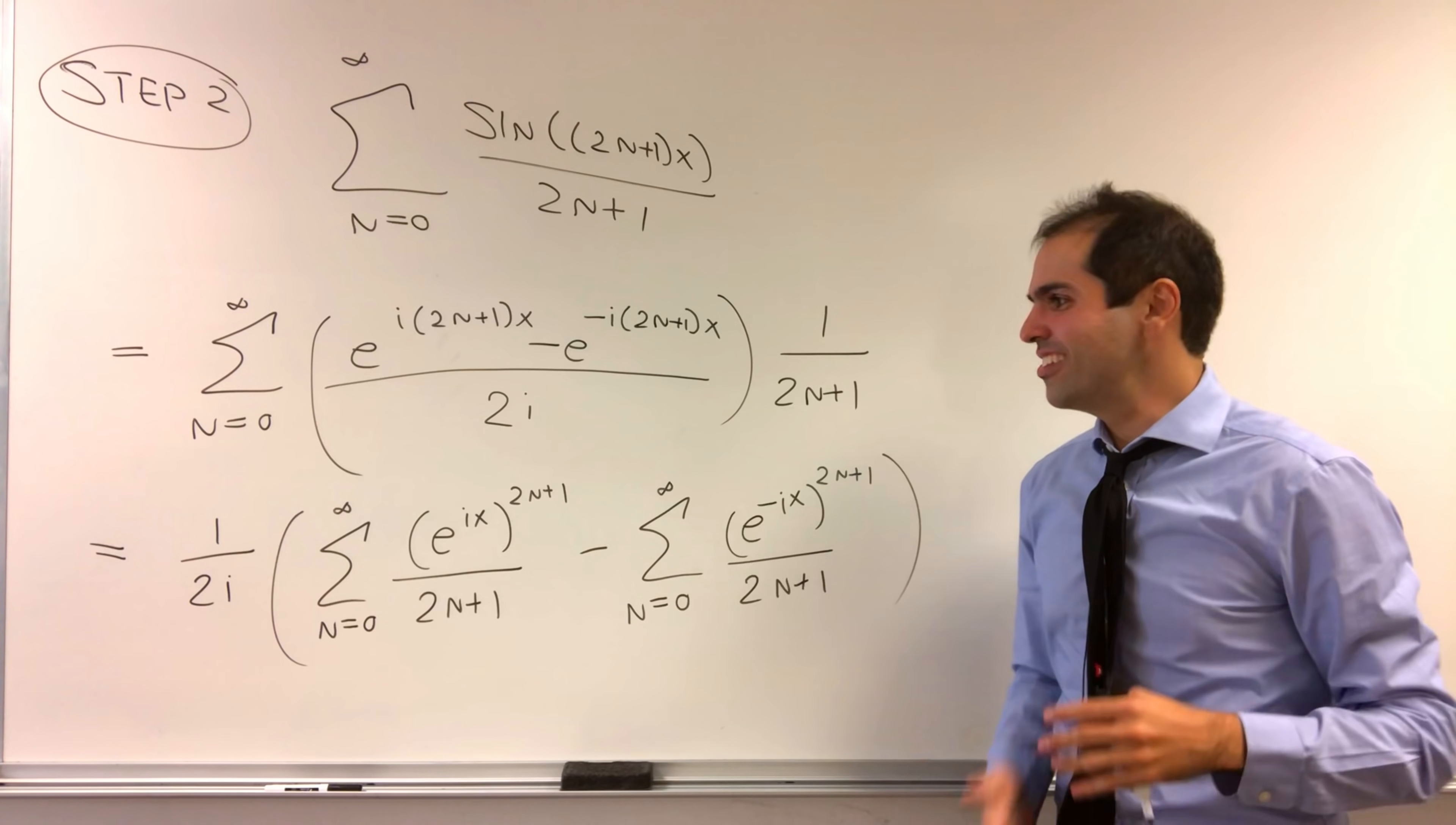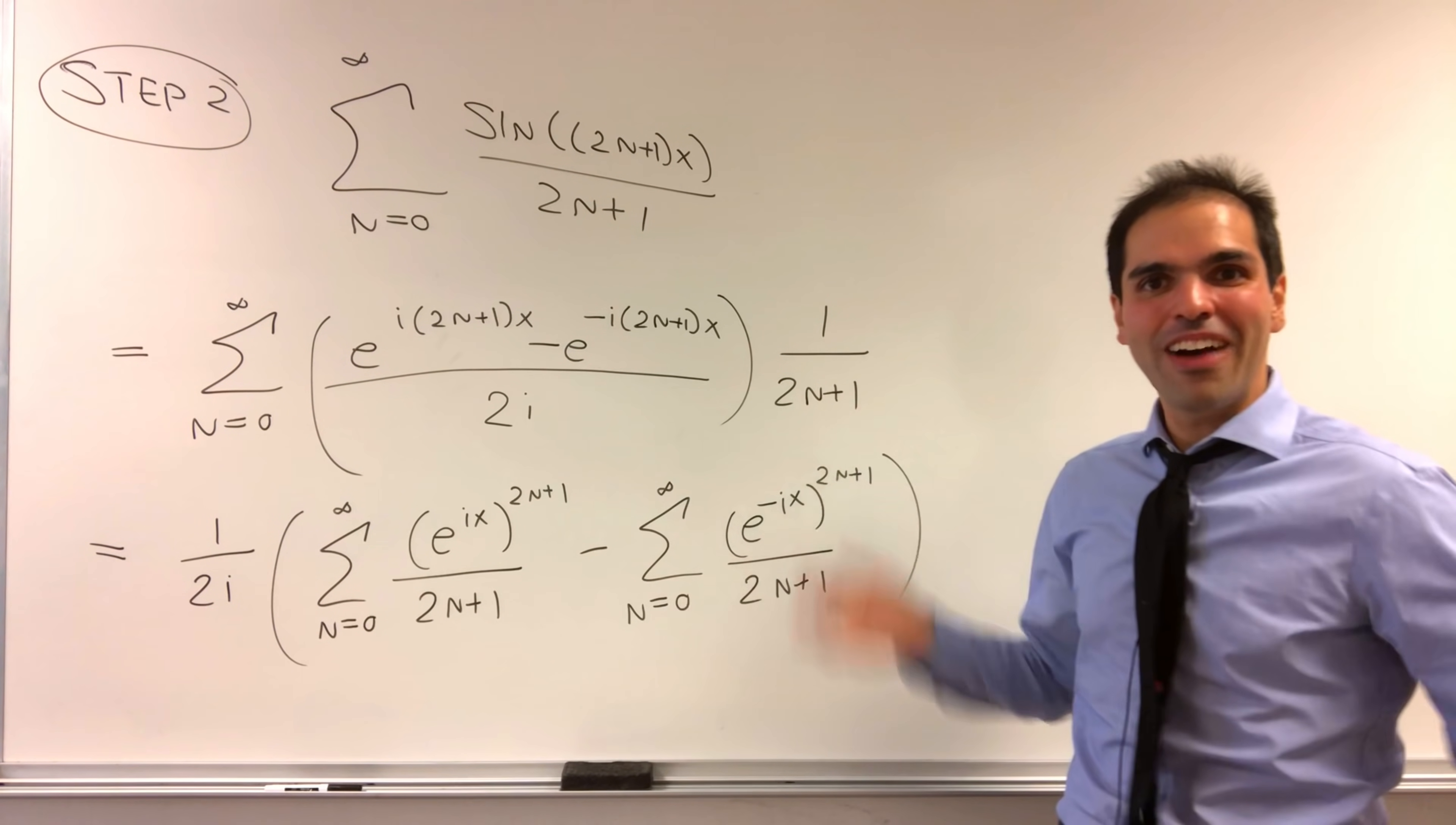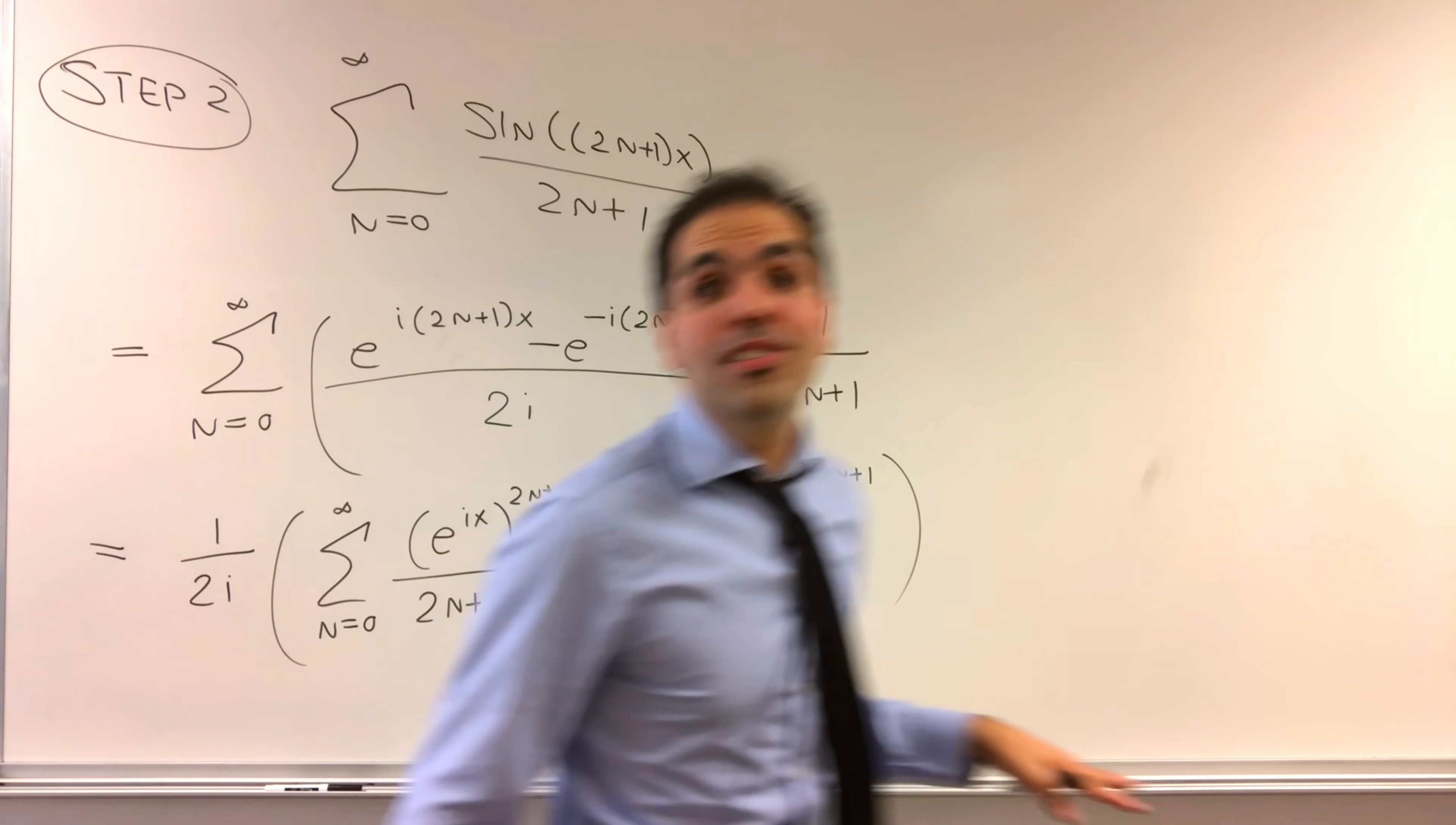It's like old McDonald had a form e to the ix, 2 to the n, e to the minus ix, 2 to the n. It's a very nice form. Now, why is this so useful?